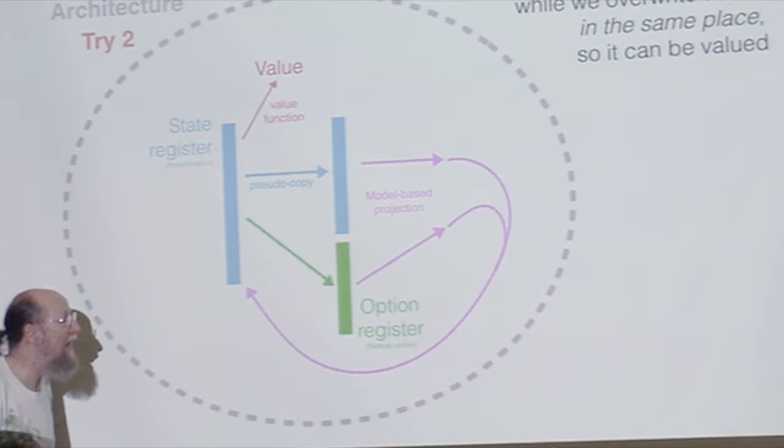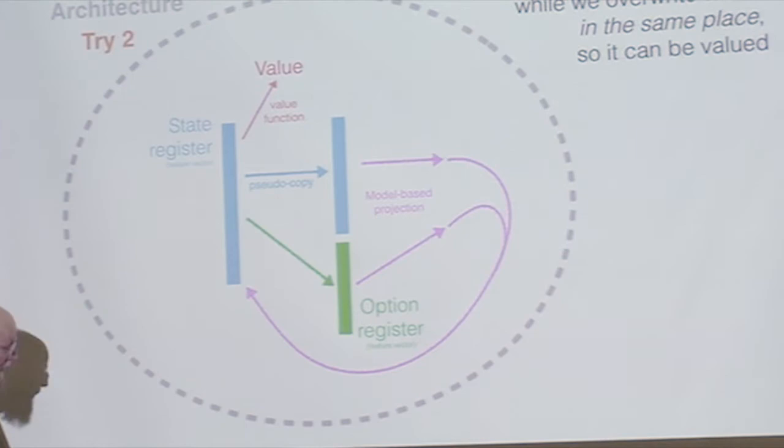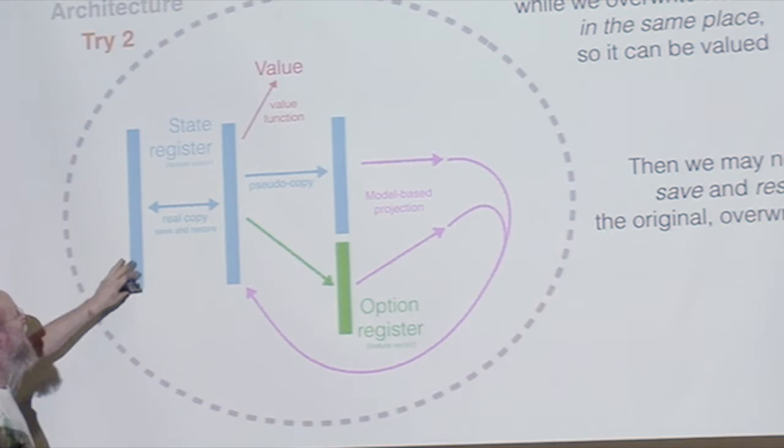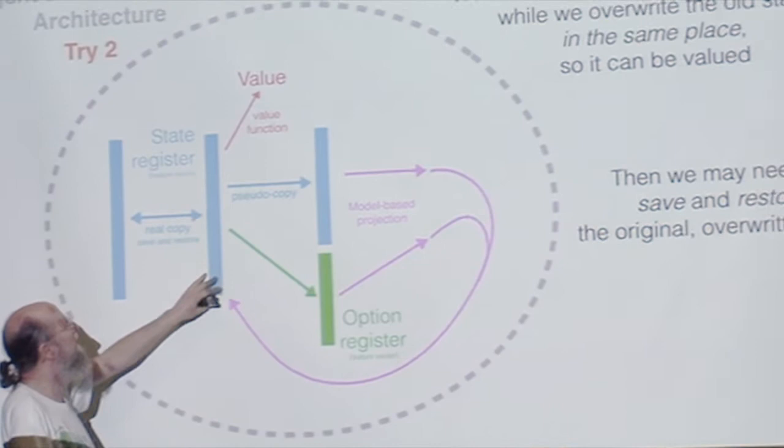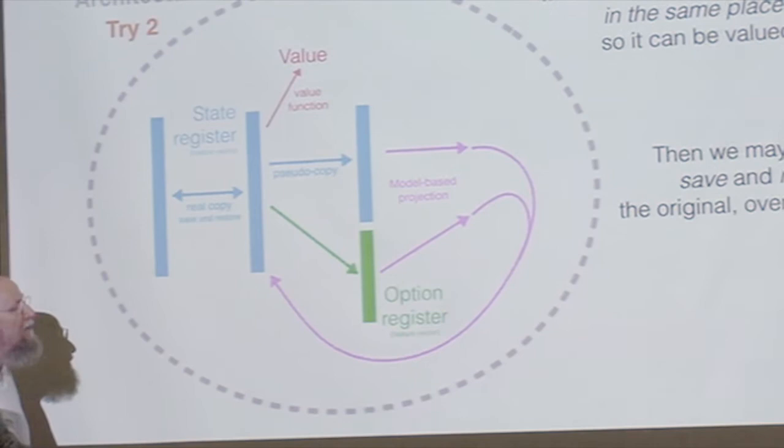But what if you can't now consider doing a different option because you've overwritten your state with the new state? I think you would end up wanting to do a real copy of the state. This whole vector, just one for one, so that you could overwrite it and then say, okay, I want to consider a different option. So you load it in from the copy. You're going to save and restore the original overwritten state. This is the kind of machine that can make up the architecture of the mind.